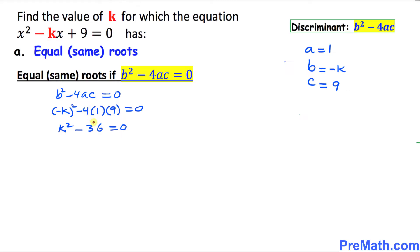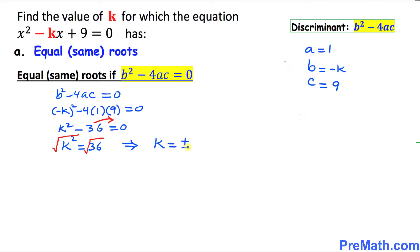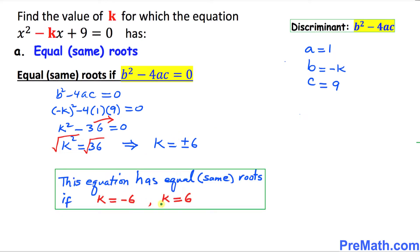Let's move the 36 to the other side, so k squared equals 36. Undoing the square by taking the square root gives us k equals positive or negative 6. So k equals negative 6 and k equals 6 is our answer.